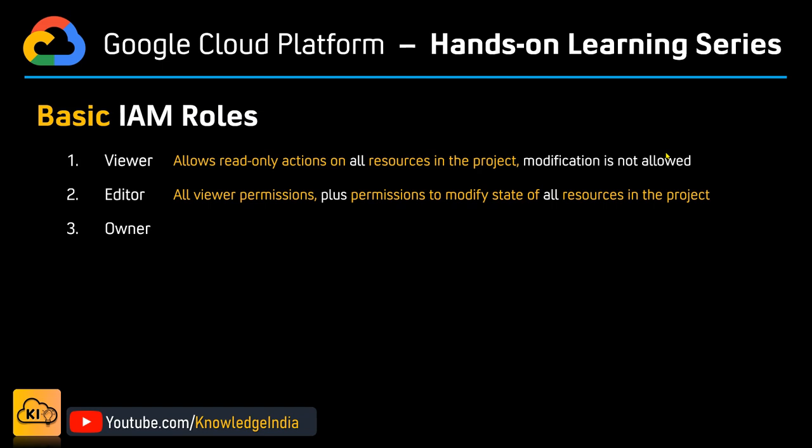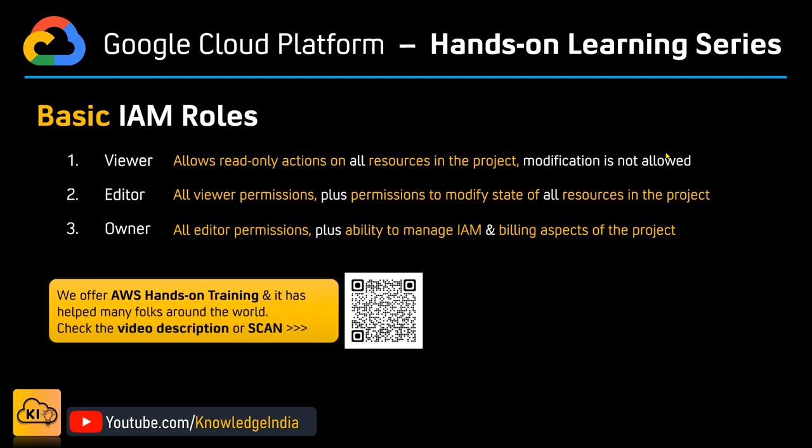But there are a couple of things you cannot do with the editor role, which come with the third one — the highest role — which is the owner role. With the owner role, you additionally get two things: the ability to manage IAM (identity and access management) and the billing aspects of the project. If you want to associate or unlink a billing account, only the owner role can do that. Similarly, granting somebody access by allocating a role within your project is something only the owner can do. Viewer and editor cannot do that.